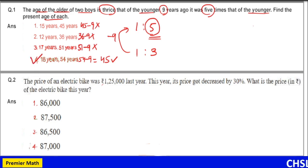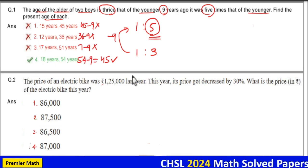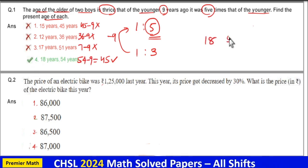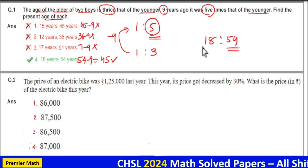Which means option 4 is your answer. That is 18 and 54. Age of the older one is 54 and age of the younger one is 18.